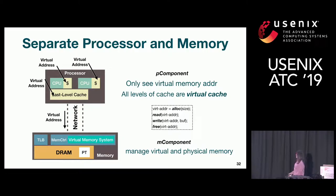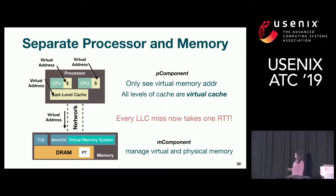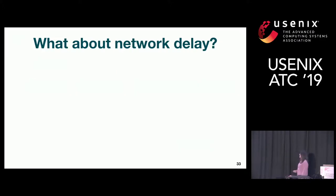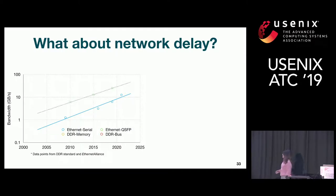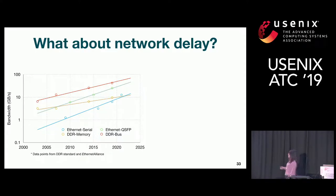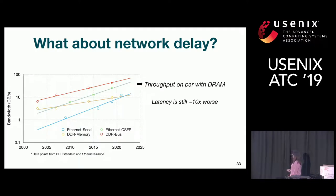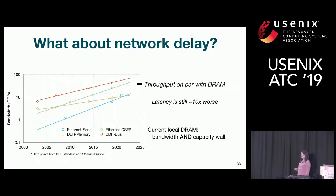But what about performance? Every last-level cache miss would involve one network round trip. Let's look at how network speed has improved over the past couple of decades. The y-axis is bandwidth — higher is better. The blue line is single-lane Ethernet, and this is single-bank DDR memory speed and DDR bus. Comparing single-lane Ethernet with single-bank DDR memory, throughput is actually close, and some projections show network would even be faster. But latency is still around 10 times worse. Also, many local DRAMs are actually facing both capacity and bandwidth walls.